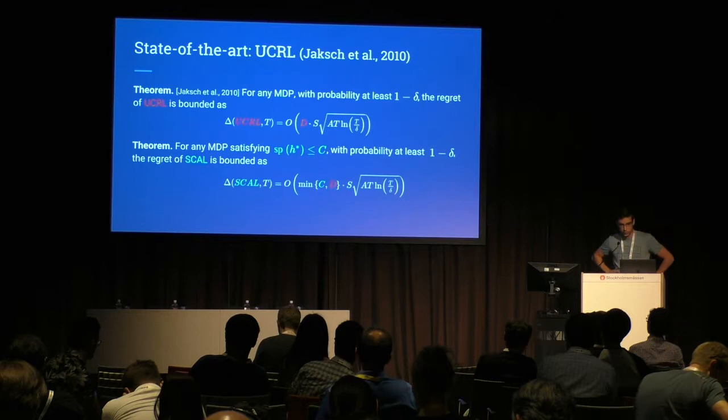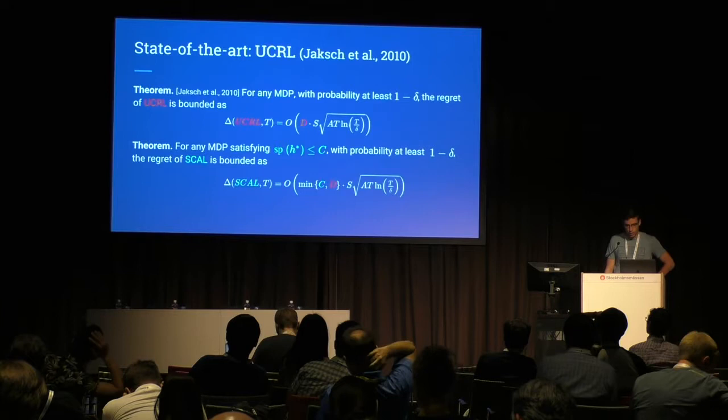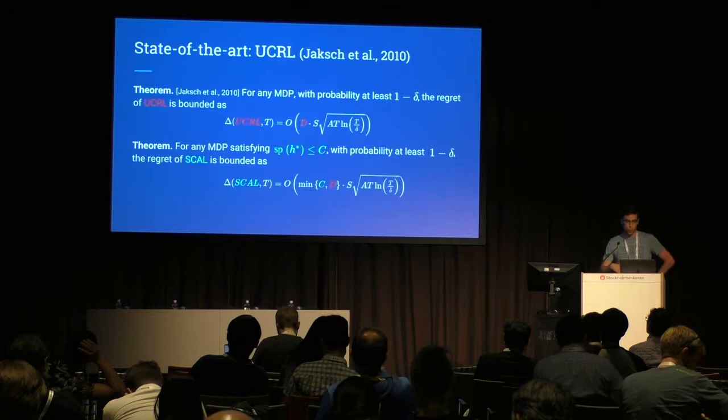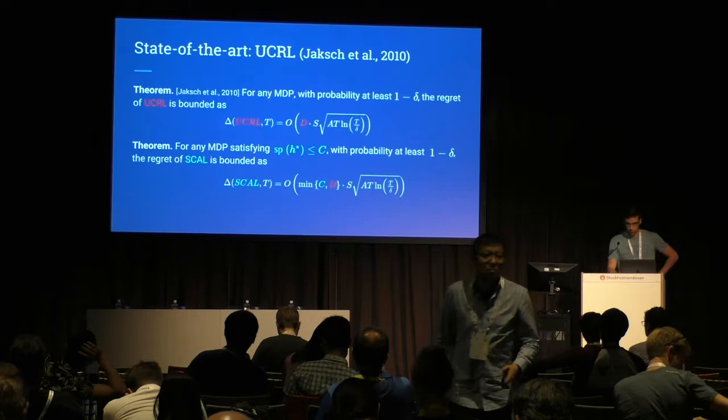The authors suggested REGAL-C, a pseudo-algorithm that tries to scale with the span of H-star instead of D in the regret. Unfortunately, it was not implementable. What we did in this work is introduce a new algorithm called SCAL — Span Constraint Algorithm — that scales with the minimum between C and D, where C is a known upper bound on the span of H-star. This requires prior knowledge, but it is a first step.